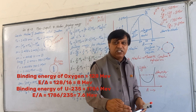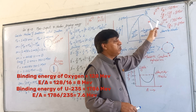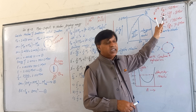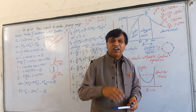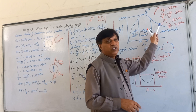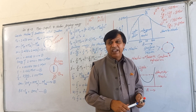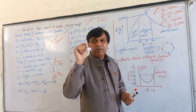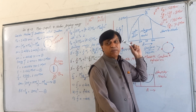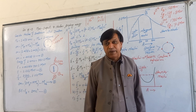Since binding energy per nucleon for uranium (7.6 MeV) is less than that for oxygen (8 MeV), oxygen is more stable than uranium. This is why this isotope of uranium is widely used in nuclear explosions. When a thermal neutron is applied to uranium, its nucleus breaks up, and approximately 200 MeV of energy can be released during that nuclear fission process.